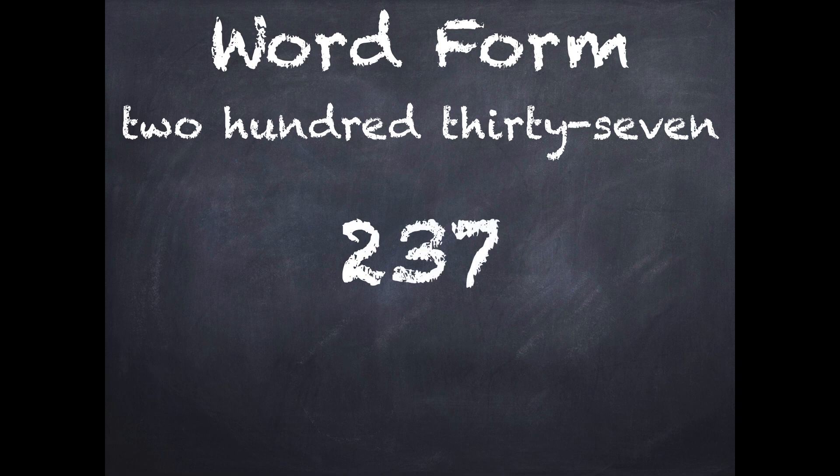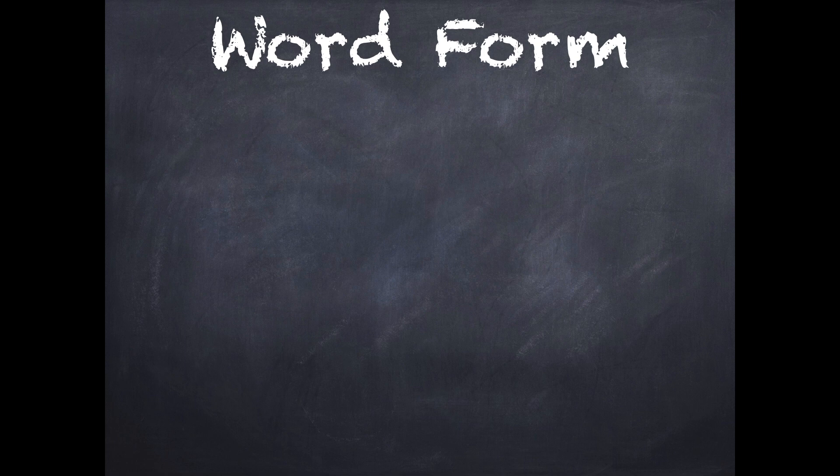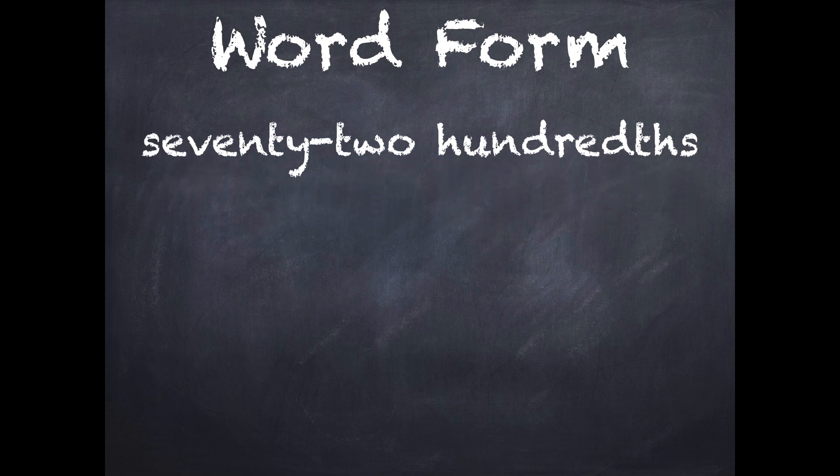But what if we get a decimal? Here's a decimal. We'll talk about some of the clues that we know it's a decimal. Seventy-two hundredths. We know it's a decimal because of the THS on the end. That THS tells us it's a decimal. I know it's all decimal because there's no 'and,' so it's not a mixed number.